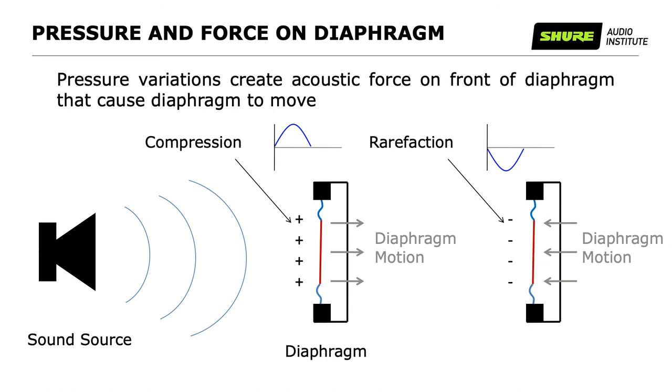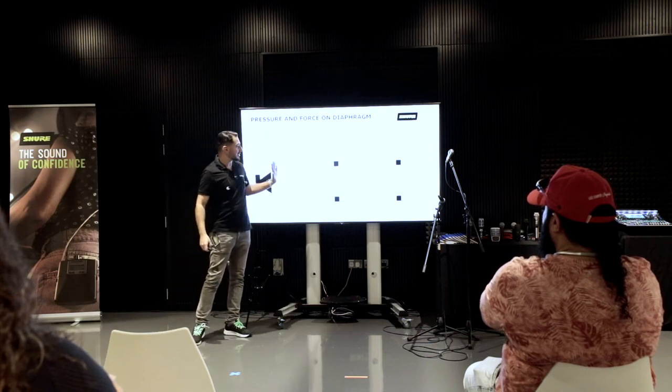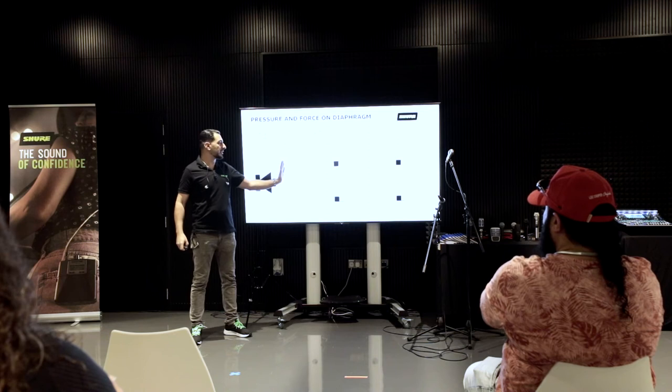This is one stage of conversion — acoustic to mechanical. Since there is movement, I want to use that movement to generate an electrical signal so I can use it in the PA system. More pressure at the front causes the diaphragm to compress inward, and less pressure makes the diaphragm motion go outward.